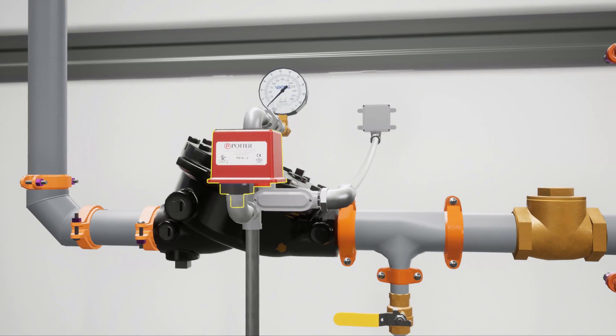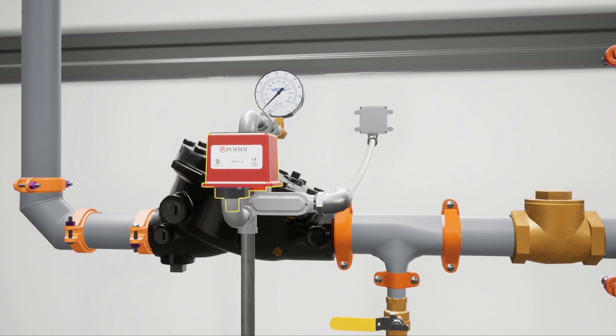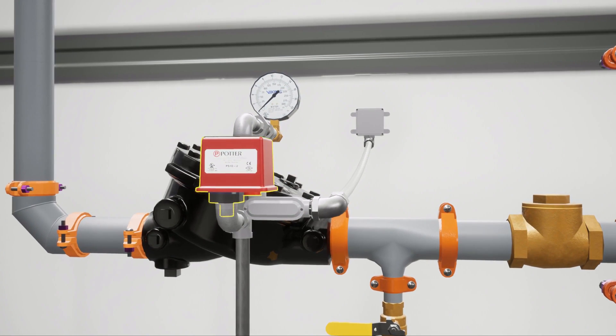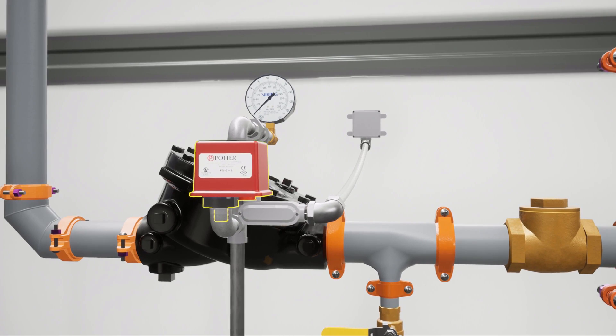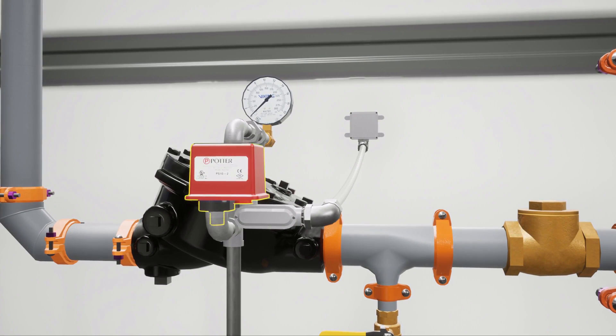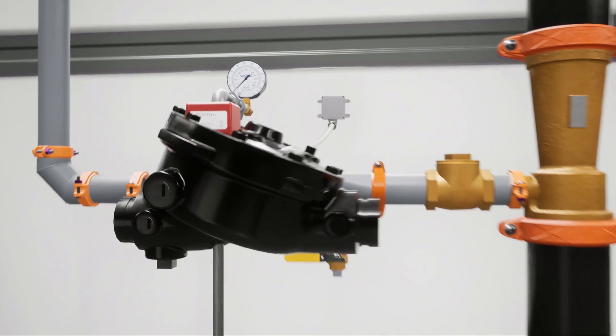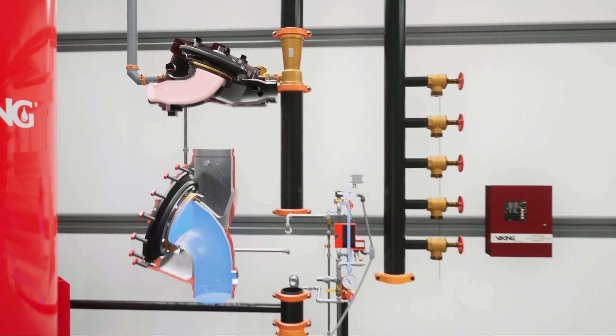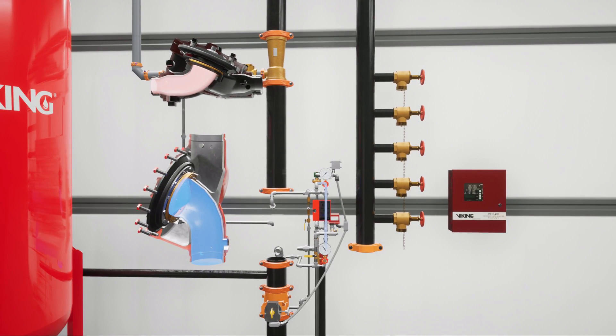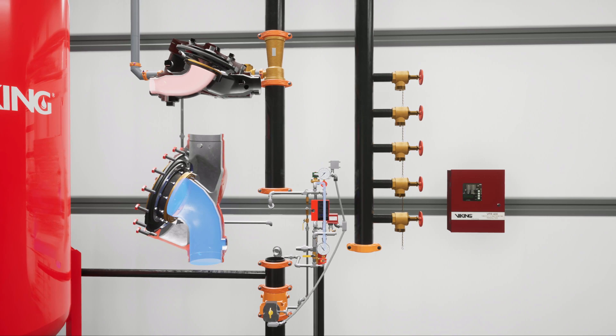The drop of prime pressure causes the priming pressure switch to activate. Priming line pressure switches are required for factory mutual global approval. After the release of prime pressure, the deluge valve's clapper and the concentrate control valve's clapper open simultaneously.